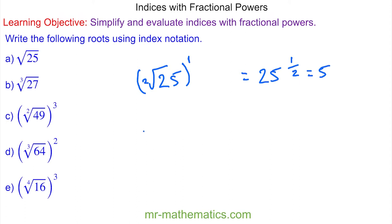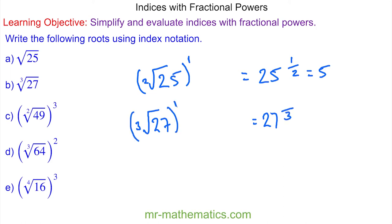For question b, we have the cube root of 27. Again, 27 is our base. Three is the denominator, and this is raised to the power of one, so our numerator is one. 27 to the power of one third is three.